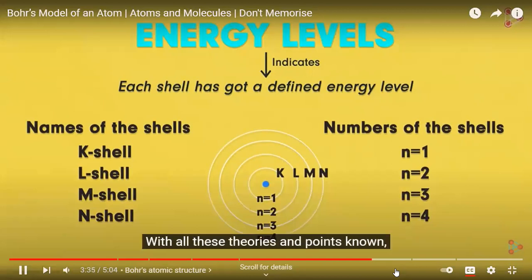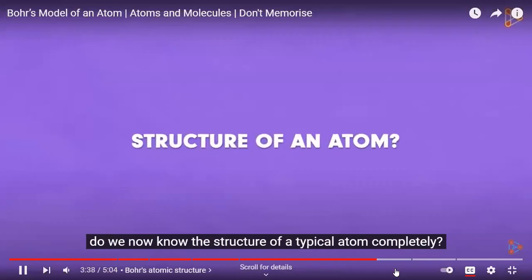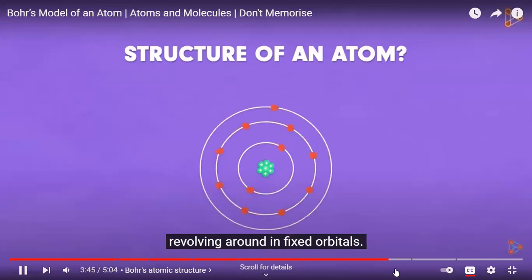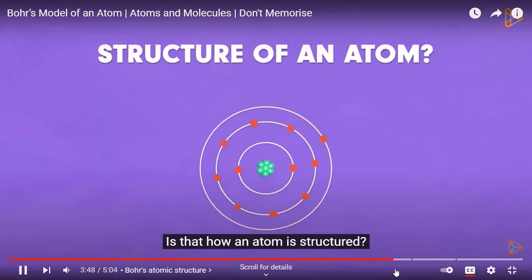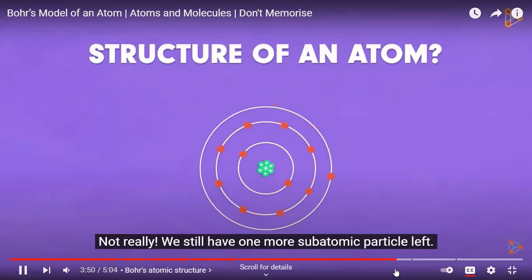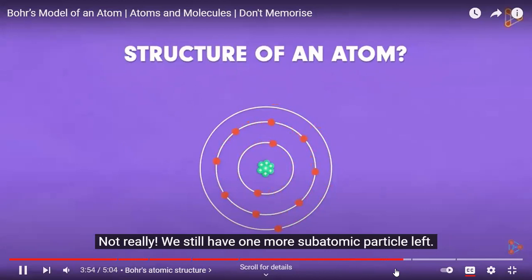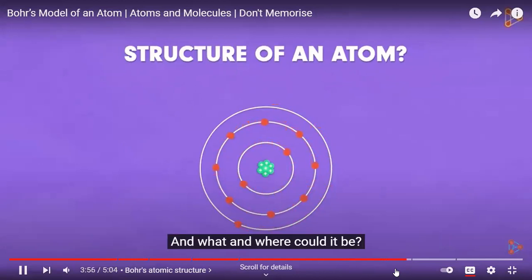With all these theories known, do we now know the complete structure of a typical atom? The nucleus contains positive protons and electrons revolving around in fixed orbitals — but is that all? Not really, we still have one more subatomic particle left. What and where could it be? Let's find that out.